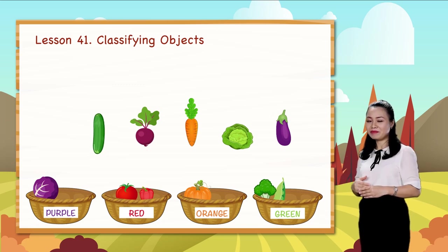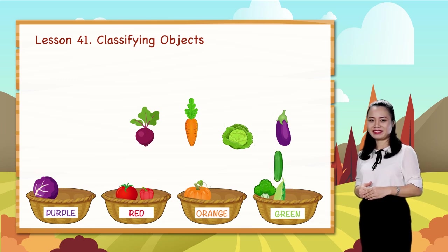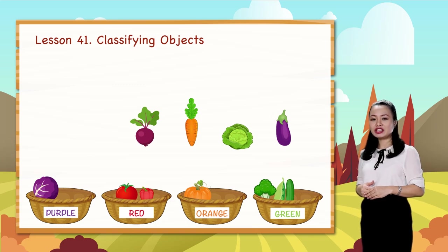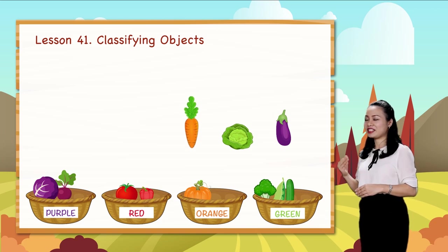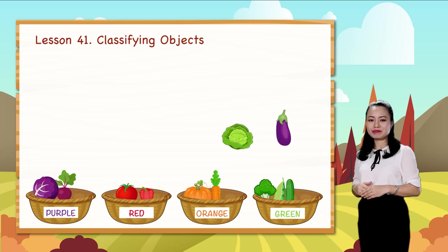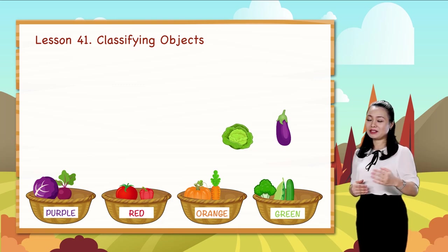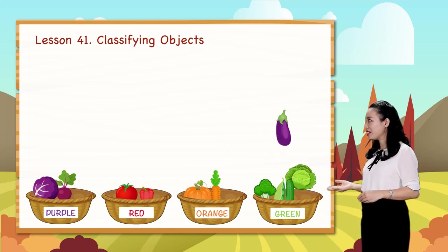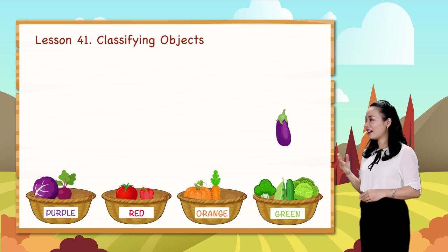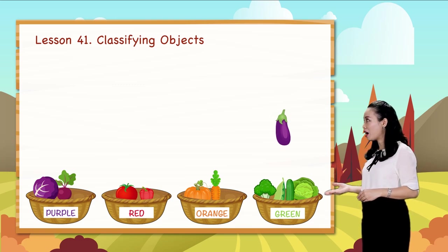A cucumber, paste it into the green group. A beet, paste it into the green group. A beet, paste it into the orange group. A cabbage, paste it into the green group. An eggplant, paste it into the purple group.